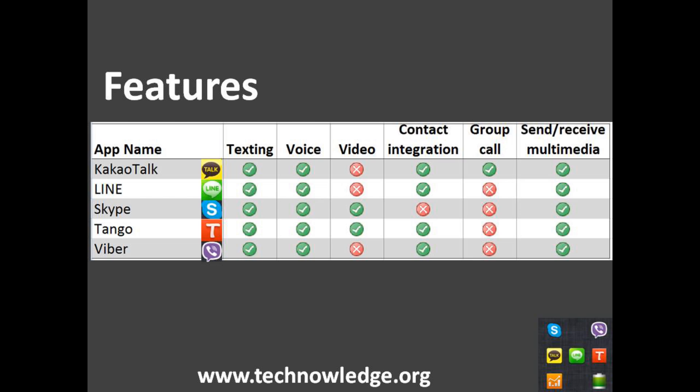Without further ado, let me switch to screen capture and show you some graphs of the results of the tests I ran. First, let's quickly look at the features comparison of these five different VoIP apps. As you can see, they all do texting and Voice over IP. Only Skype and Tango do video calls, and all of them except Skype do contact integration — integrating the existing contacts in your address book with the app, so you don't need pin numbers or usernames. The app integrates with your existing contacts, which makes it far easier to use.